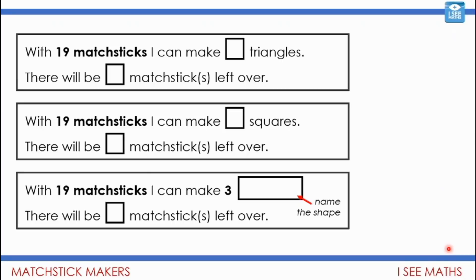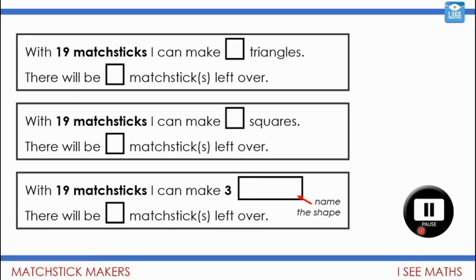Now the next step: with 19 matchsticks, how many triangles can you make and what will be left over? How many squares and what will be left over? And look at this task: with 19 matchsticks I can make three of which shape, and how many matchsticks will be left over? Is there only one shape you can use to answer this question, or more than one shape? Pause the video and have a go at those three tasks.